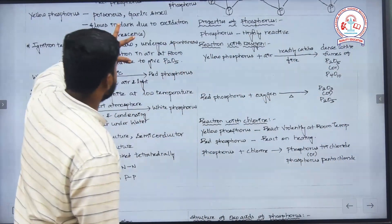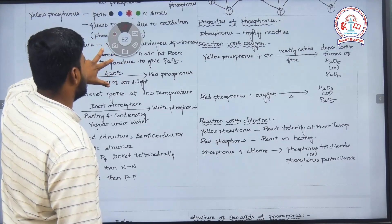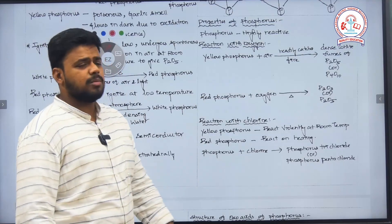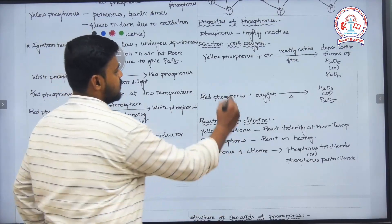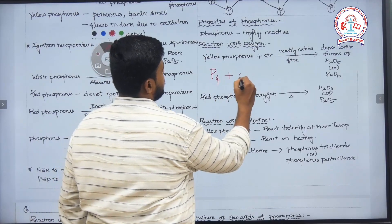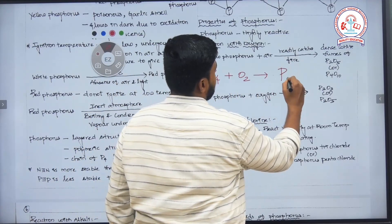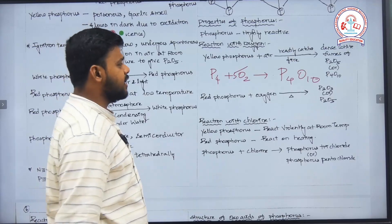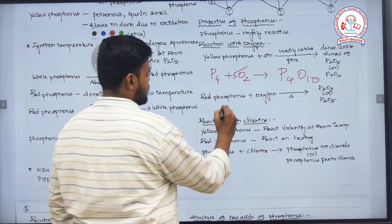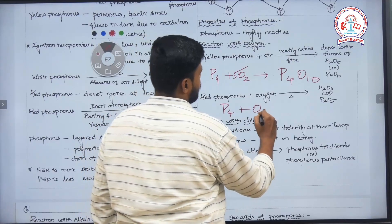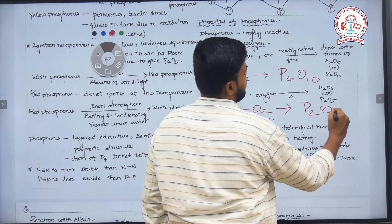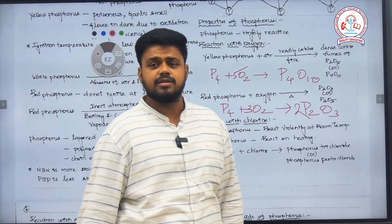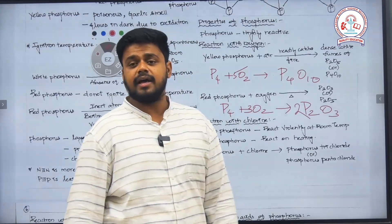Now for the properties of phosphorus: since it has an ability to undergo combustion reaction in air very easily, it reacts with air to form phosphorus pentoxide. Phosphorus reacts with oxygen to form phosphorus pentoxide (P4O10). Similarly, it has an ability to form phosphorus trioxide also: P4 plus O2 gives P4O6 (phosphorus trioxide). These are the products when phosphorus is exposed to air or oxygen.